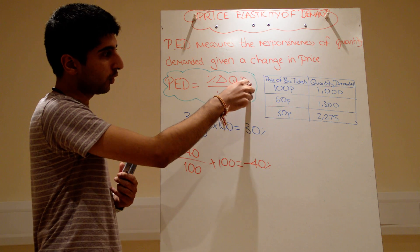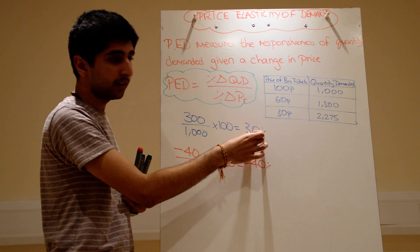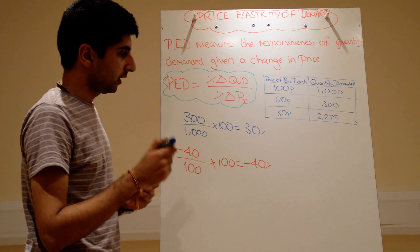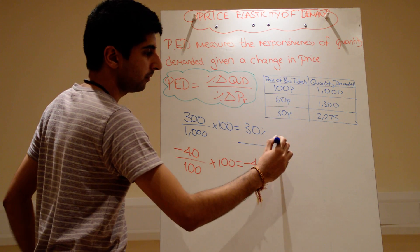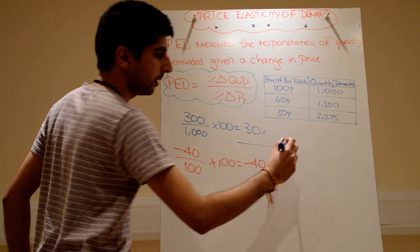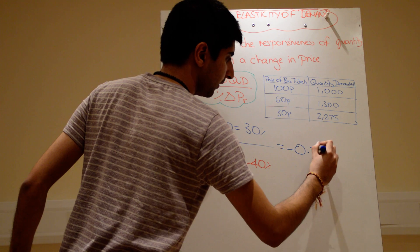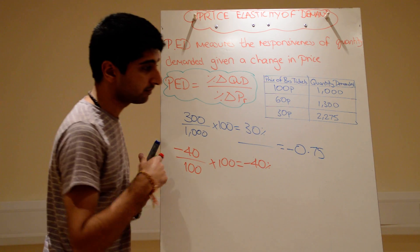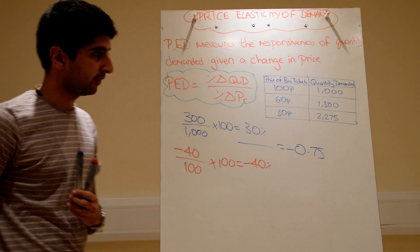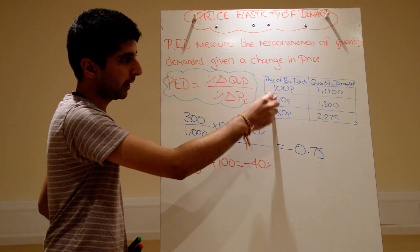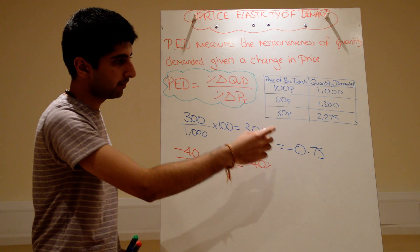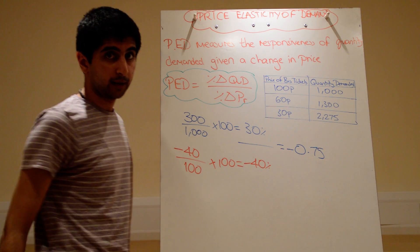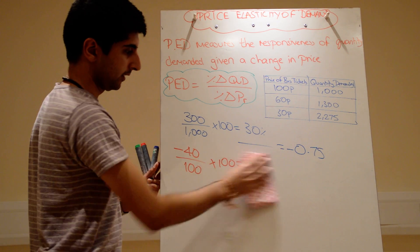So 30 percent is the percentage change in quantity demanded and minus 40 percent is the percentage change in price. Put them over each other: 30 divided by minus 40 equals minus 0.75. That's our PED figure. So when we change the price from one pound to 60p, that's the response in the quantity demanded.